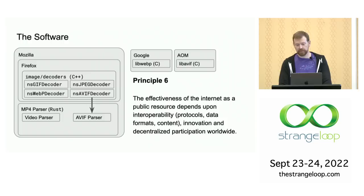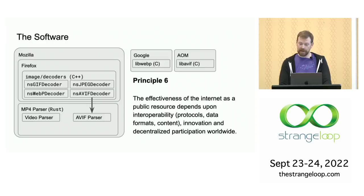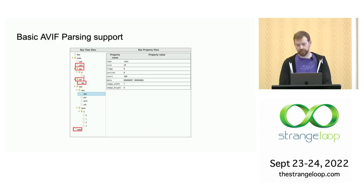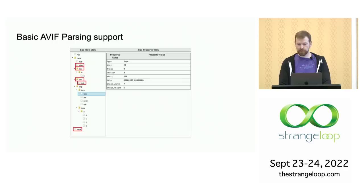WebP support was relatively simple because it relied on a Google library to do most of the work, which is good since the WebP format was well-established at that time. But since AVIF was a new format, it was important to have multiple implementations. To add AVIF support to the Firefox MP4 parser, what was missing was the entirety of the HEIF, MIAF, and AVIF standards. For my prototype, I only added support for the five boxes necessary to extract the image data. After that, I passed the image data from Rust to C++ so the AV1 decoder could decompress it, and then passed the pixel values to the graphics system to render.